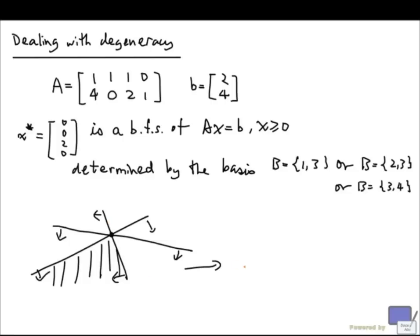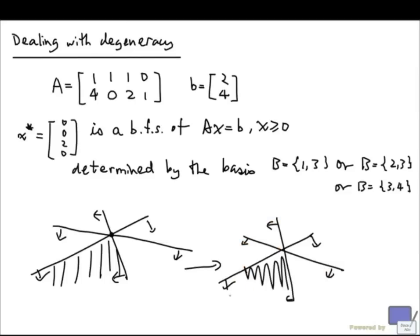But if I nudge these inequalities a little bit — move every inequality a little bit — then I will have an extra point, but I don't have the ambiguity of the intersections anymore. Every one of these red points in the feasible region is uniquely determined by the intersection of two of these lines. So the idea of perturbation is the same: we nudge the constraints a little bit, and the goal is to eliminate degeneracy.